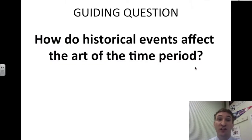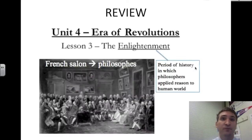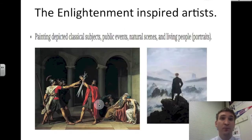The guiding question for today is: how do historical events affect the art of the time period? Artists don't live in a vacuum, in a box — they are influenced by the history happening around them. As a review, the history happening around these artists was the Enlightenment, a period in which philosophers applied reason to the human world. The Enlightenment inspired artists as well as revolutions.